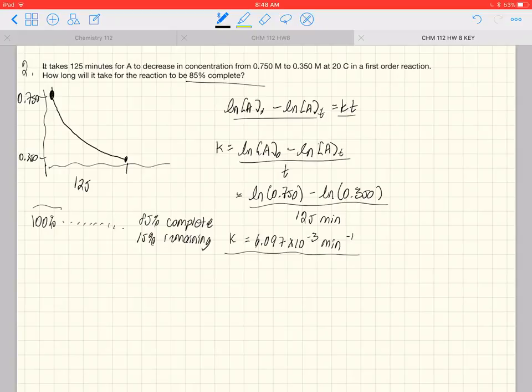Okay, we have 100% remaining in the beginning and 15% remaining at the end and we want to know how long it takes. So again, we use the integrated rate equation for this. The natural log of A at time zero minus log of A at time t is equal to kt.